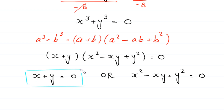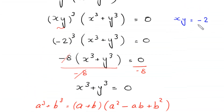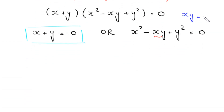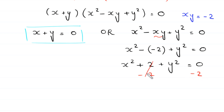From the second equation x² - xy + y² = 0, we substitute xy = -2. This becomes x² - (-2) + y² = 0, which simplifies to x² + 2 + y² = 0. Subtracting 2 from both sides gives x² + y² = -2.